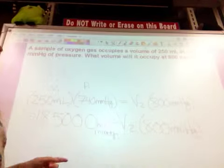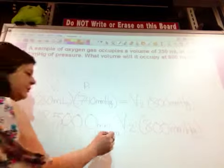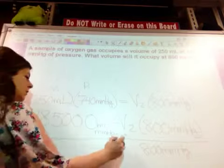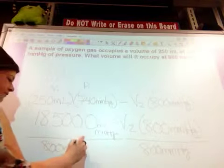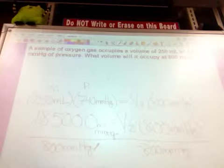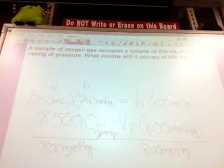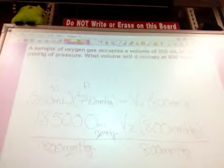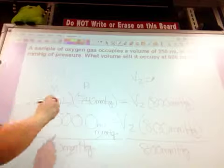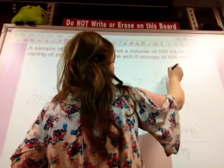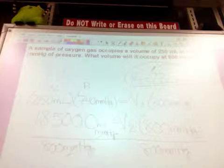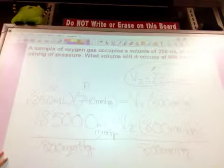So now to get V2 by itself, I'm just going to divide both sides by 800. Then I can see here that my millimeters of mercury are going to cancel out. So I'm going to be left with this number divided by this number. And then that should give me my volume equaling 231 milliliters. So this would be my example of a Boyle's law problem.